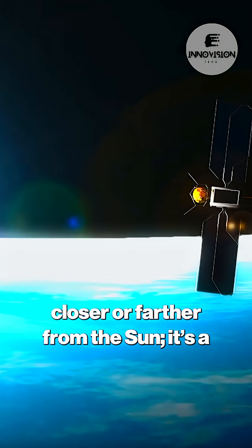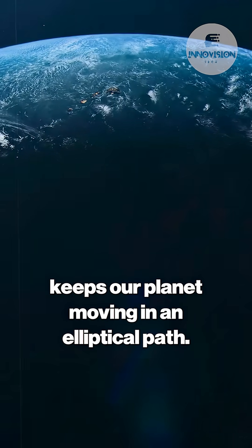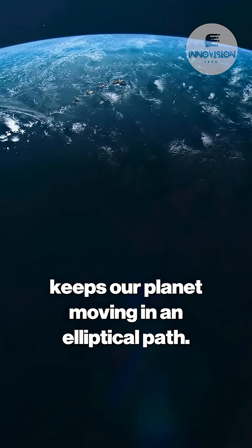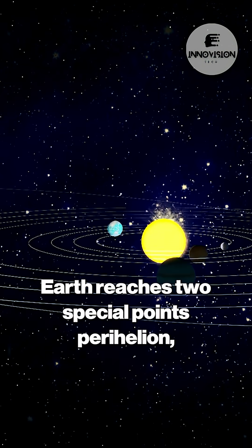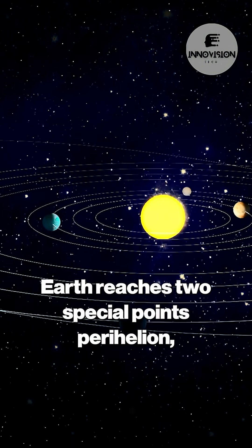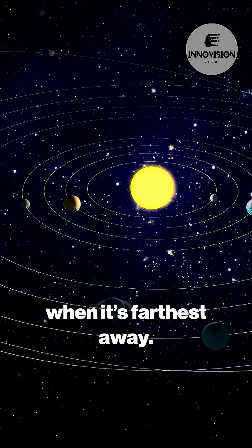Earth's orbit isn't just about getting closer or farther from the sun, it's a fascinating dance shaped by gravity that keeps our planet moving in an elliptical path. This elliptical orbit means that twice a year, Earth reaches two special points: perihelion, when it's closest to the sun, and aphelion, when it's farthest away.